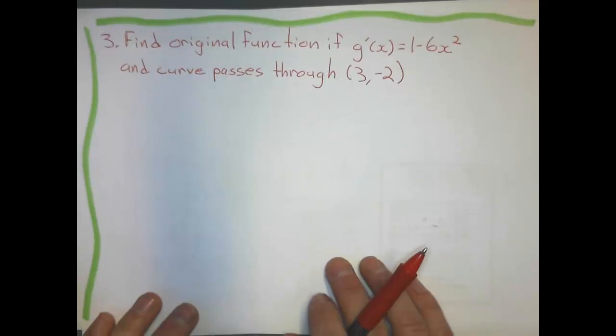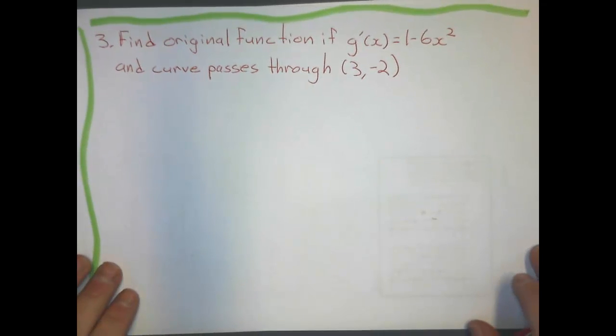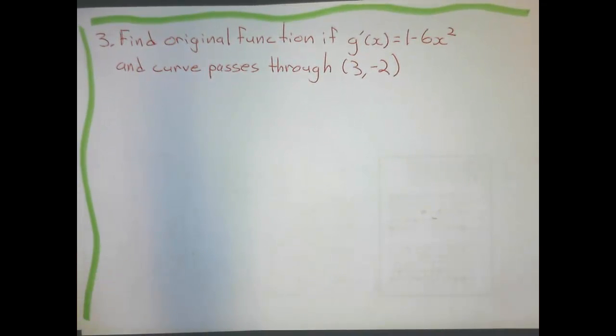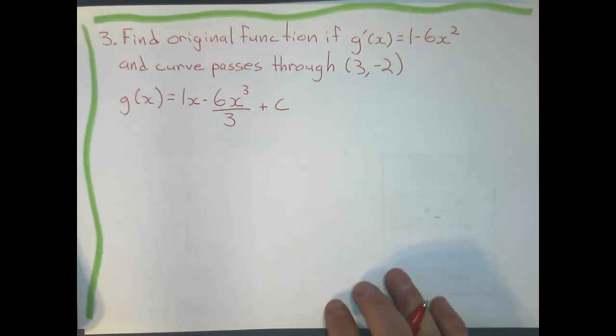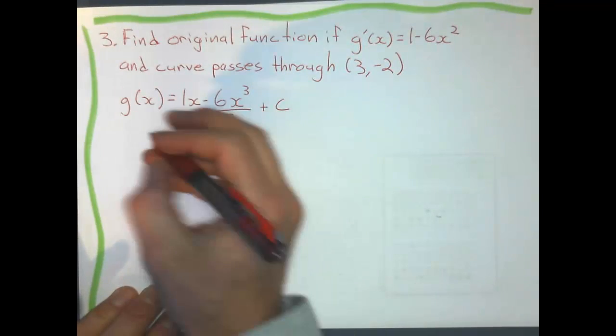Let's try this example. Go ahead and pause it and see if you can do it on your own. There's my first step after I anti-differentiate it, and then I'll simplify it.